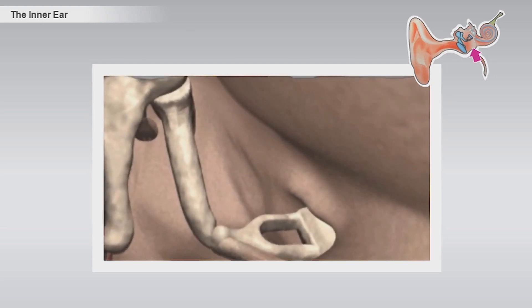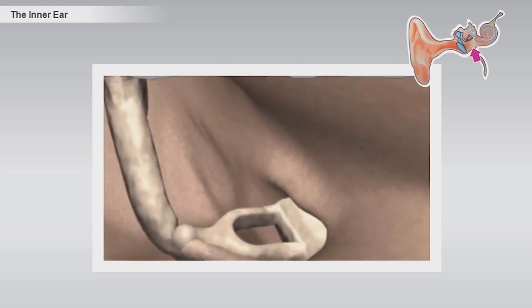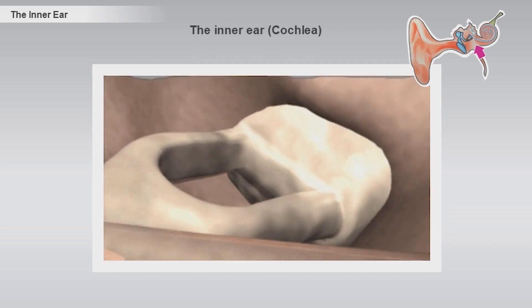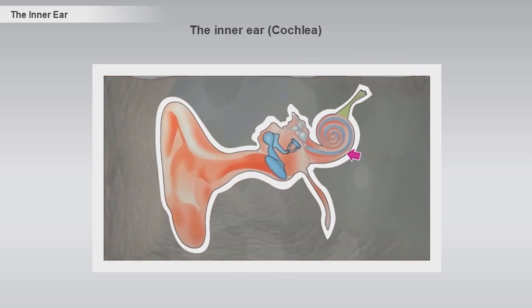The oval window forms the entrance to the inner ear. The inner ear consists of a snail shell-shaped structure with the Latin name cochlea. The cochlea coils about two and three-quarter times and has an unfolded length of 30 millimeters.